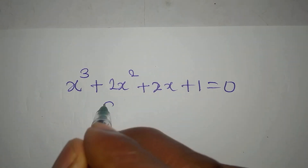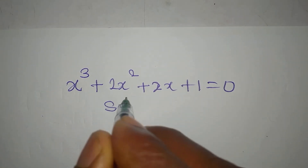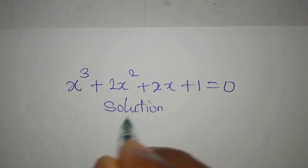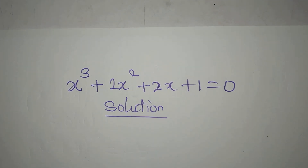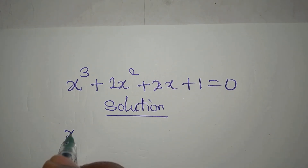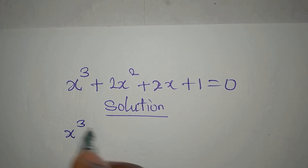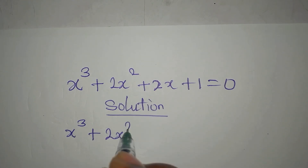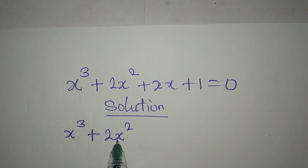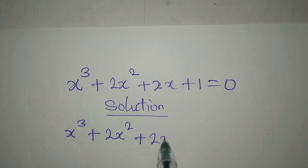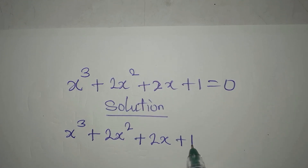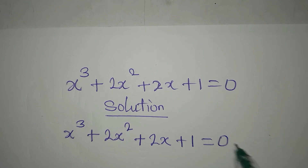Hello everyone, welcome to Fucco Mathematics. Here we have this problem to deal with: x to the power of 3 plus 2x to the power of 2 plus 2x plus 1 equals 0.